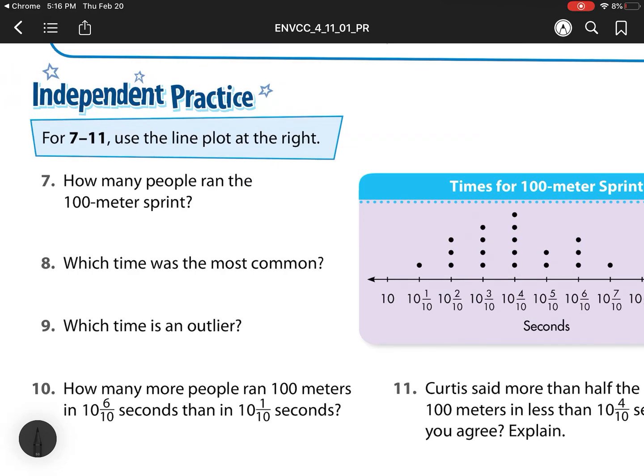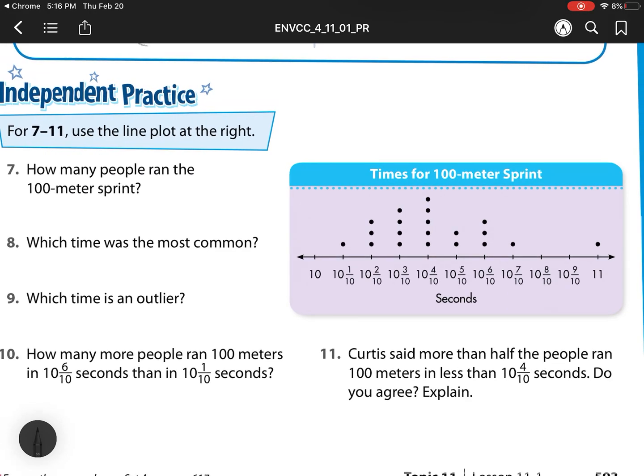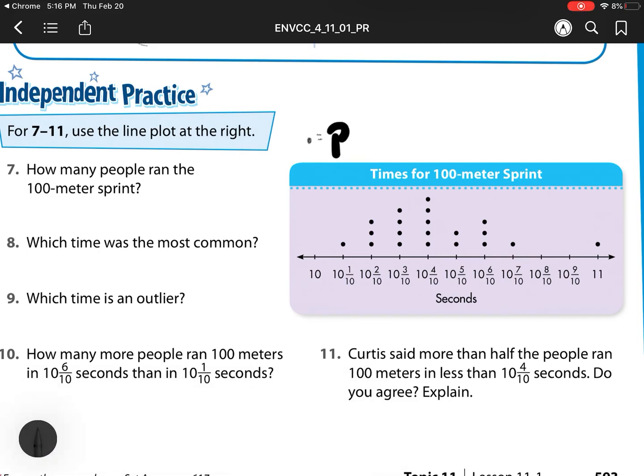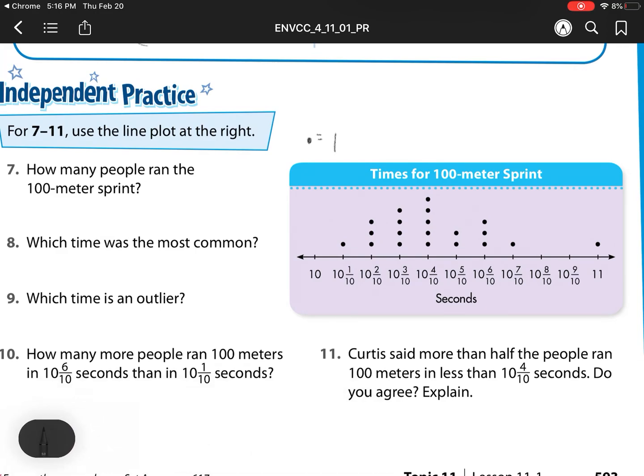So we have how many people ran the 100 meter sprint. Well remember, we are in my class saying every dot and what it represents. So here we have this dot represents people. So these dots are people or a person. So every dot is a person.